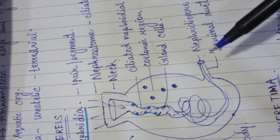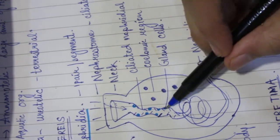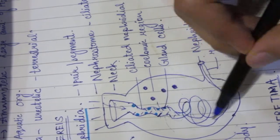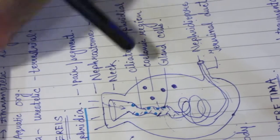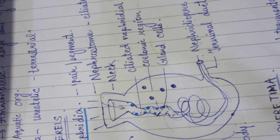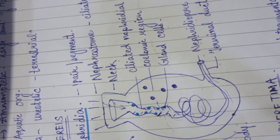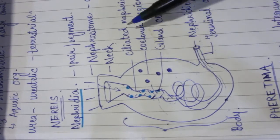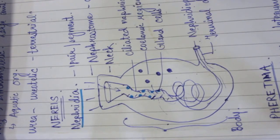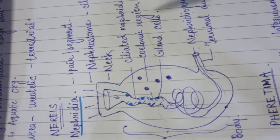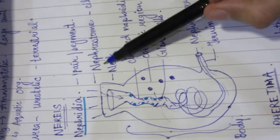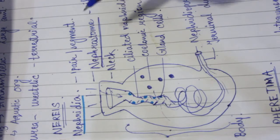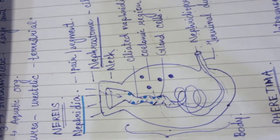In the coelomic region, nitrogenous waste is present. This waste passes through the nephrostome, through the nephridial tubules, and finally out through the nephridiopore. The other pathway is via gland cells, which absorb nitrogenous waste from the blood and also exit through the nephridiopore. This level of detail will not come in exams — knowing that the nephrostome is present and the overview is enough.